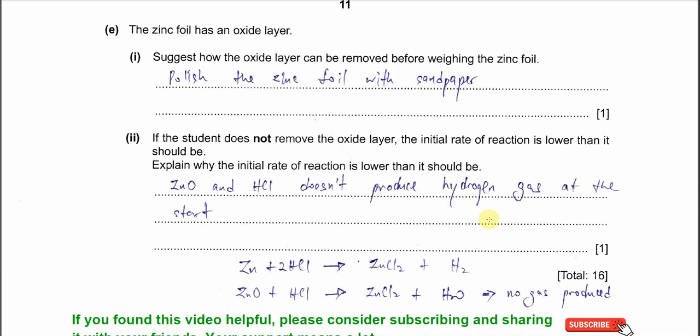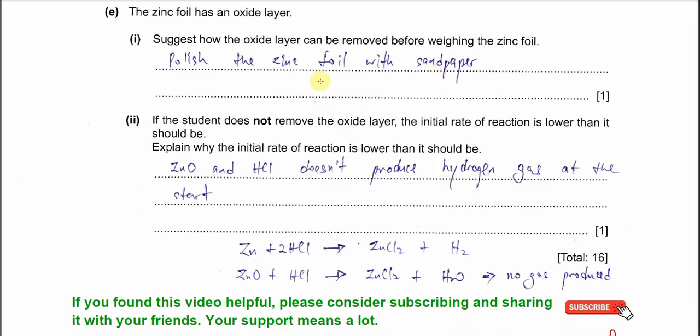Part E. The zinc foil has an oxide layer. Suggest how the oxide layer can be removed before weighing the zinc foil. Very easy - we just use sandpaper to polish the zinc foil so the oxide layer can be removed easily.